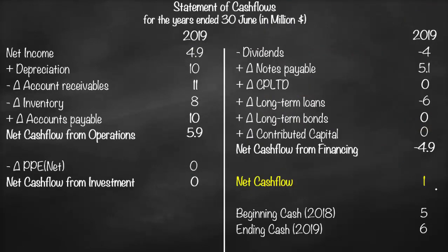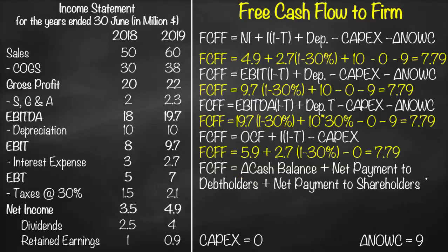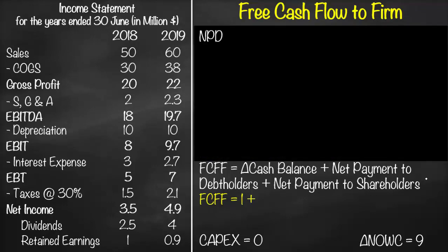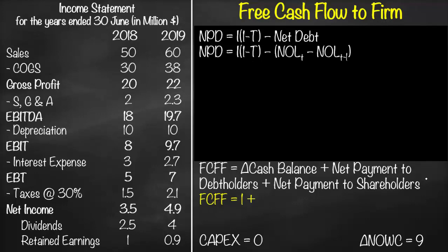From our statement of cash flows, net cash flow equals 1, so the change in cash balance is 1. For net payment to debt holders, from the creditors' perspective, they receive interest — which is tax deductible, hence multiplied by (1 − t) — minus net debt. Net debt represents new debt issued minus debt repayment.